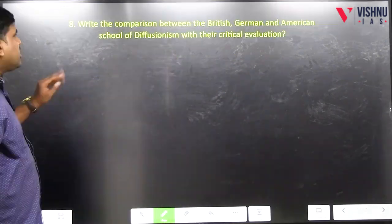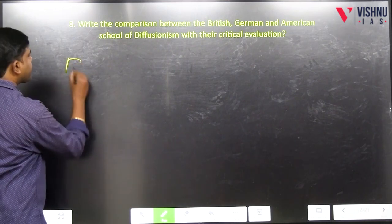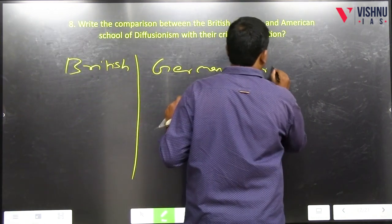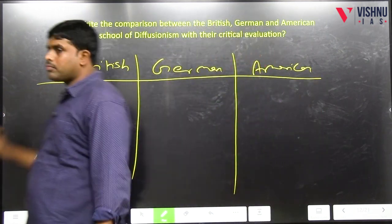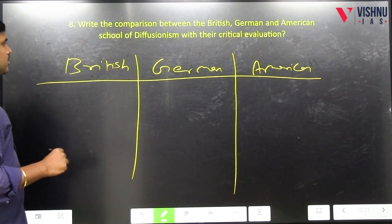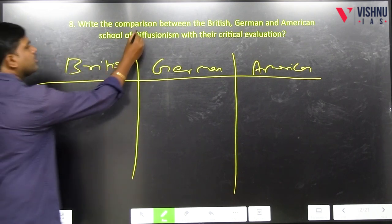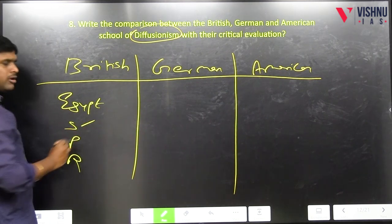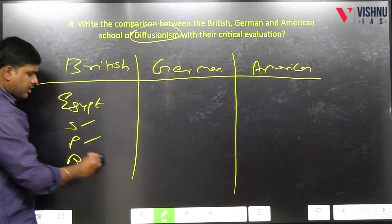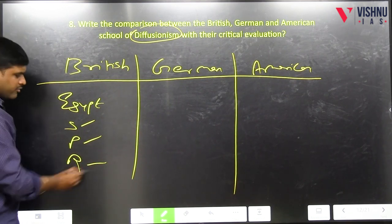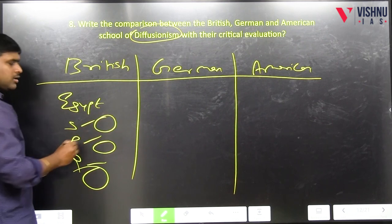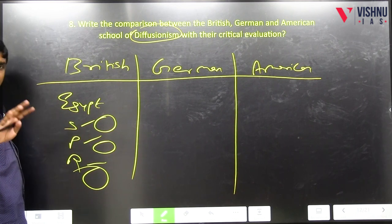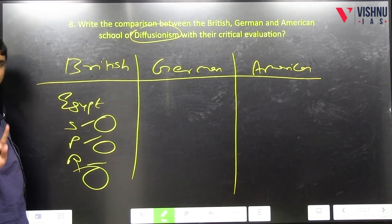Write the comparison between British, German, and American schools of diffusionism. British: SPR — Smith, Perry, Rivers. Smith: founder, extreme diffusionist; Perry: 'children of the sun god'; Rivers studied Todas. Germany — now only we discussed: Ratzel — Formand Gedanke; Leofrebenius — criteria of quantity, museum collection, invisible cultures; Graebner — primeval cultures; Schmidt — primitive, primary, secondary, tertiary culture circles. However, there are multiple centers, but the dominating center is Egypt.